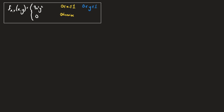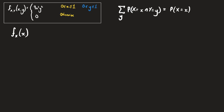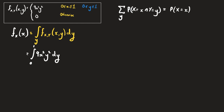Now we want to calculate the marginal probability density function of x. If this were a discrete random variable, we would add up the joint probabilities across all possible values of y to get the probability that x equals some value little x. With a continuous random variable we do exactly the same thing except we replace the sum with an integral, integrating the joint PDF over the full range of y. Substituting in our PDF, this equals the integral from y=0 to y=1 of 9x²y² dy, where 9x² is just a constant multiplier with respect to y.